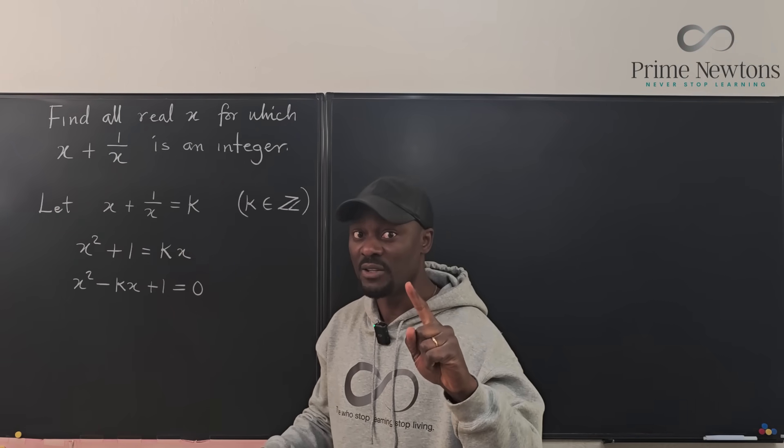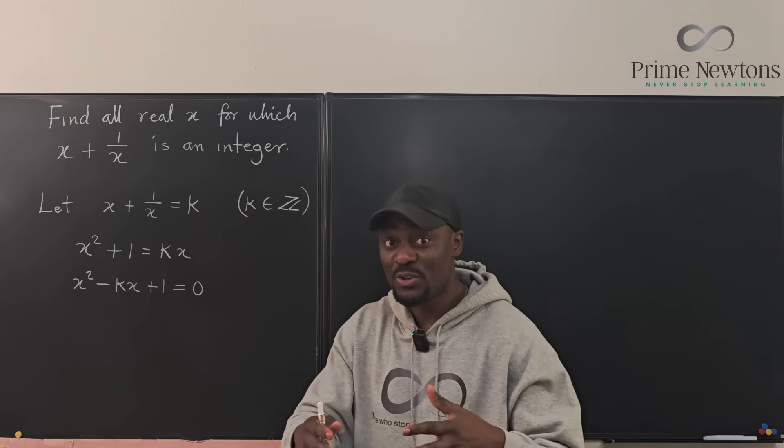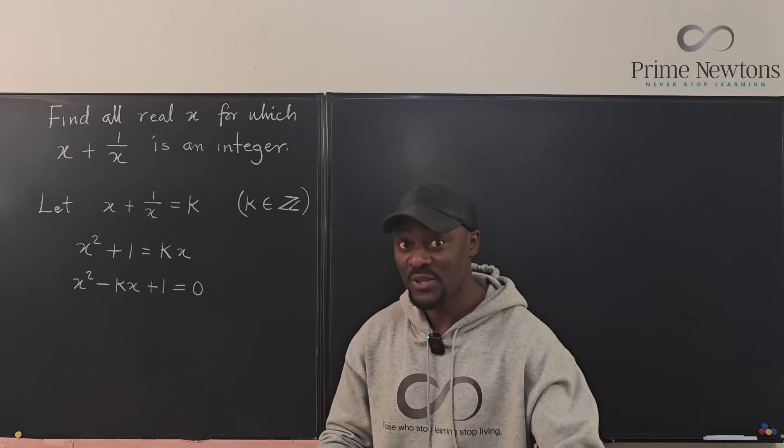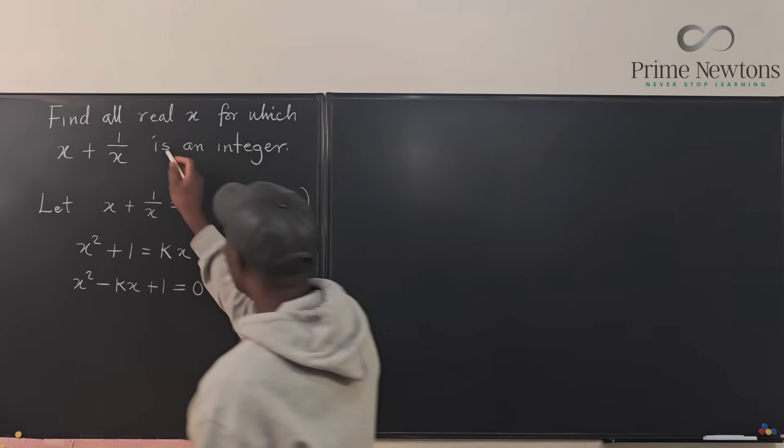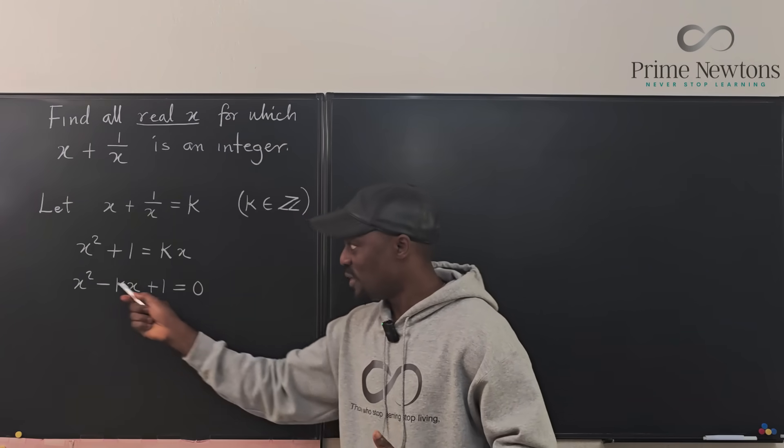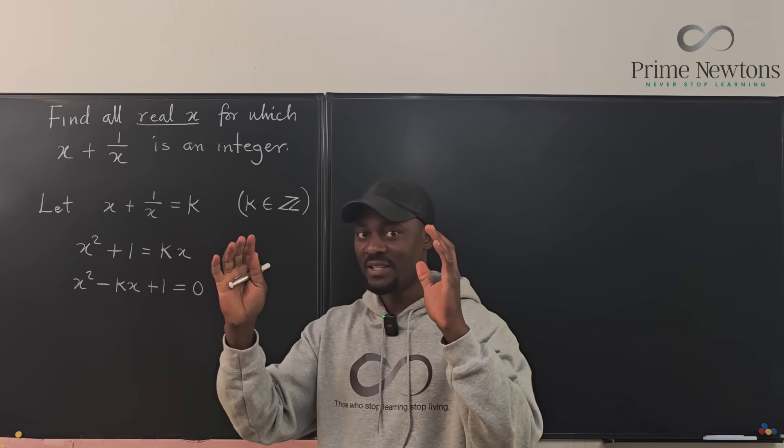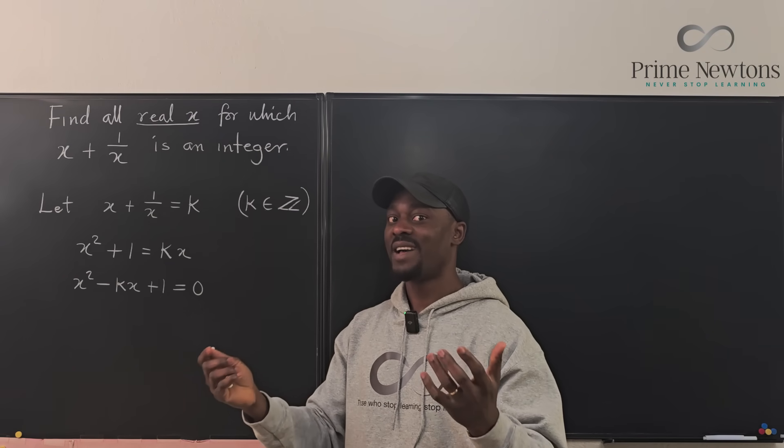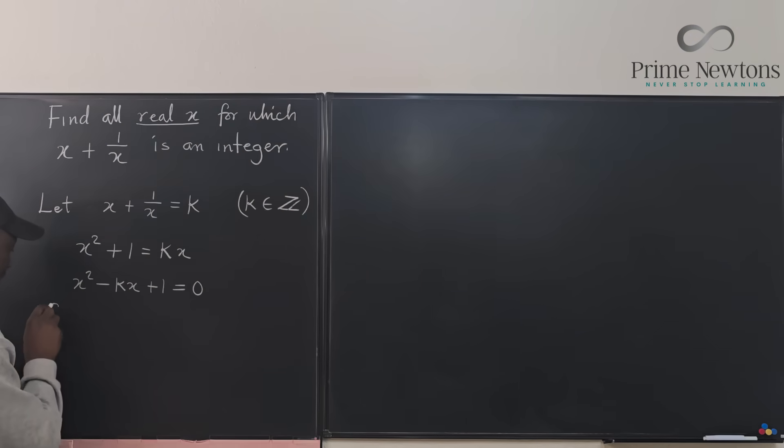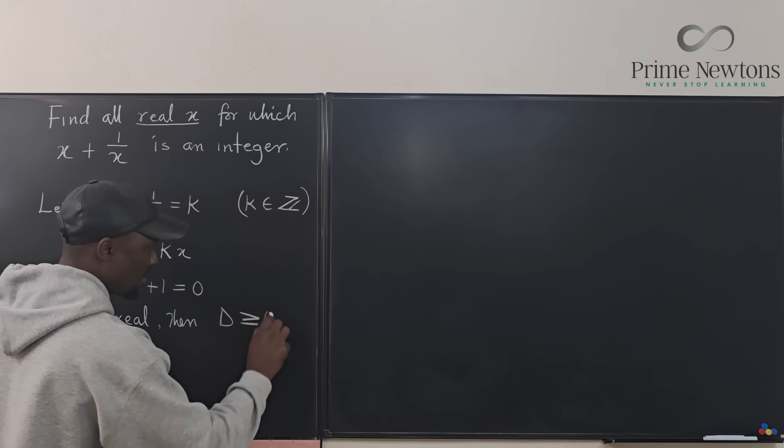And x has to be real. So this is where we narrow things down. In math, sometimes just creating restrictions will lead you to the answer. So here, we need x to be real. For you to get a real root in any quadratic equation, we know that the discriminant has to be at least 0.